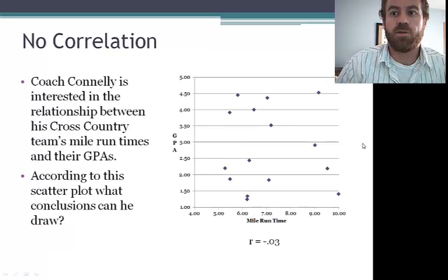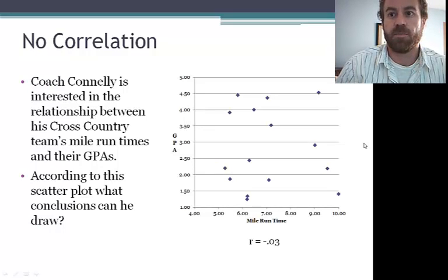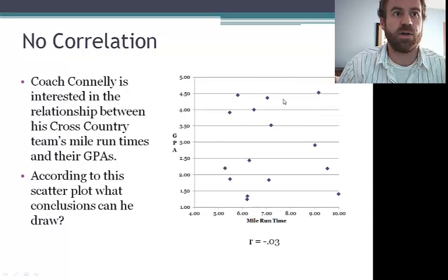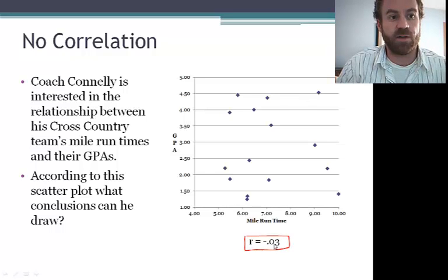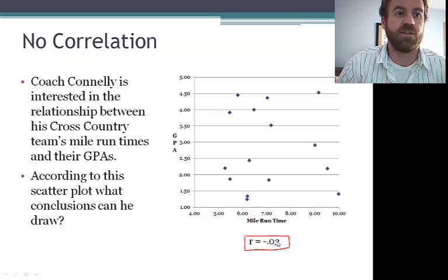Here, a coach is interested in the relationship between his cross-country team's mile run times and their GPAs. So according to this particular scatter plot, there is no relationship. And we can see this because, for one thing, the points on the chart are scattered. But really what we're looking at here is a very, or an R value, a correlation coefficient that is very close to zero. So any correlation coefficient that is that close to zero is going to indicate that there is no relationship between the two.